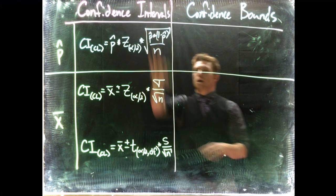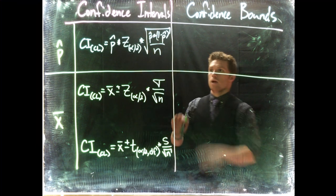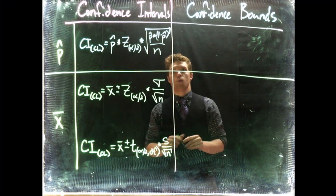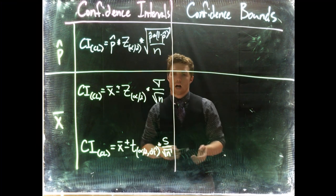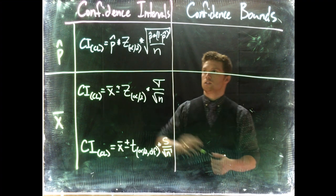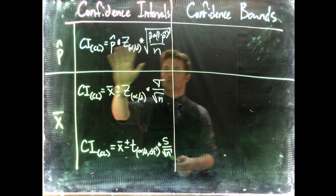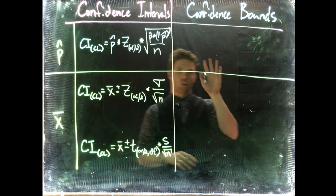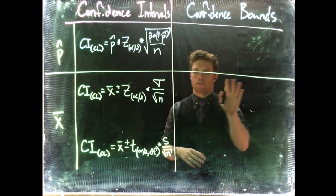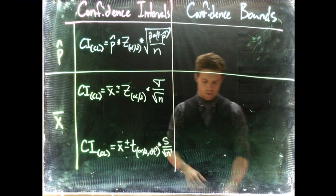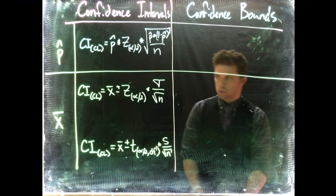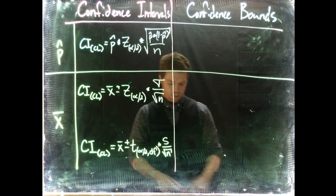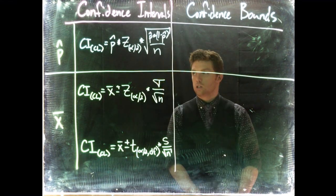Now we've got our confidence intervals, so now we need to look at our confidence bounds. These are our two-tailed confidence intervals, and now we want to do our one-tailed confidence bounds. Let's start off with our proportions.